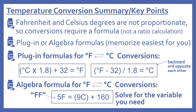When it's in parentheses, that means you do that part first. A key way to remember the plug-in formulas is that they are exactly backward and opposite each other. The algebra formula is 5F equals 9C plus 160 — just solve for the variable you need. You can remember it by noting that 5 starts with F, so 5F goes together.